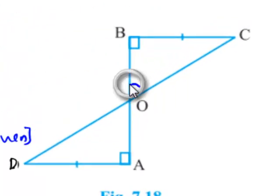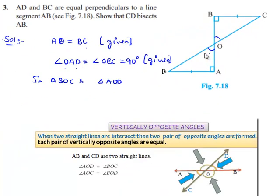And now, if we consider angle BOC and angle AOD, those will be equal as they are vertically opposite angles about point O. Therefore, angle BOC is equal to angle AOD, since they are vertically opposite angles.